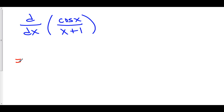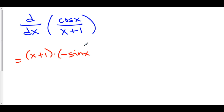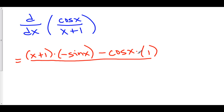The derivative of cosine of x over x plus 1. So here we have low d high. Low is all of x plus 1. D high, the derivative of cosine of x, is negative sine of x. Minus high, that's cosine of x, times d low — the derivative of my bottom is 1. All over low squared below — that's x plus 1, quantity squared.